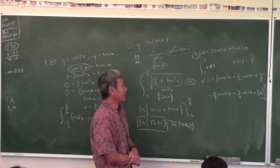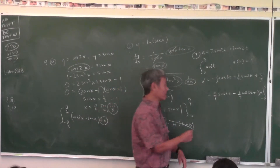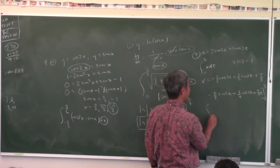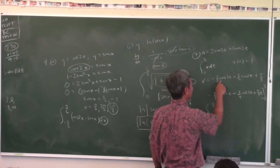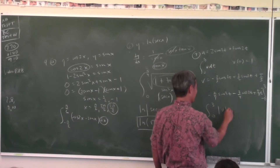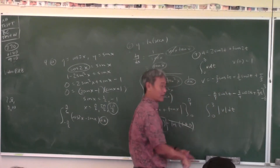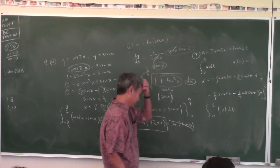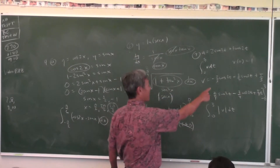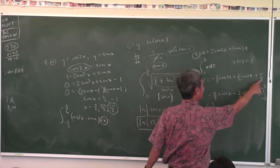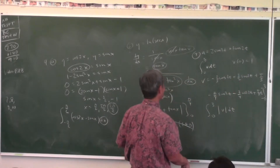So all you have to do to find the total distance traveled is do an integral from zero to three of the absolute value of the velocity function dt, and just punch it in on your calculator.